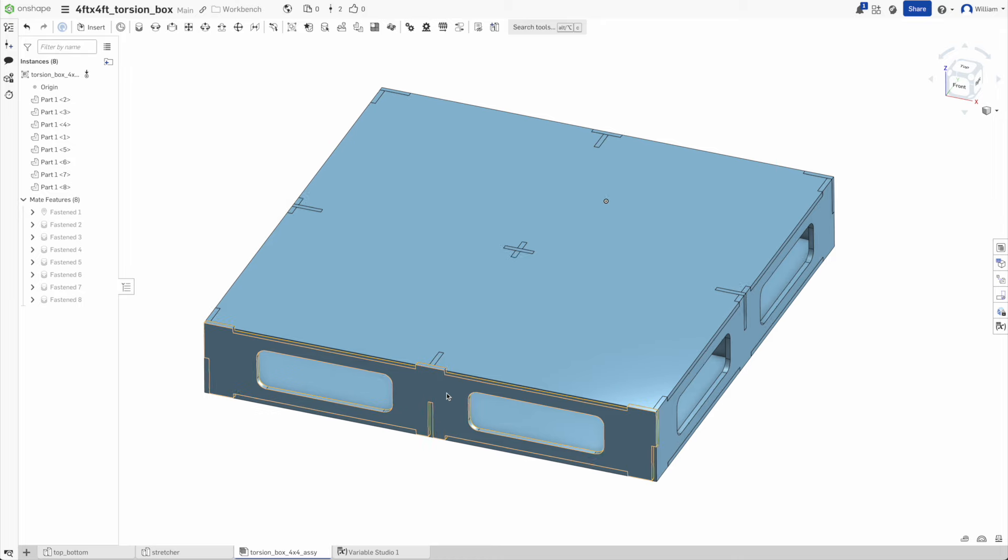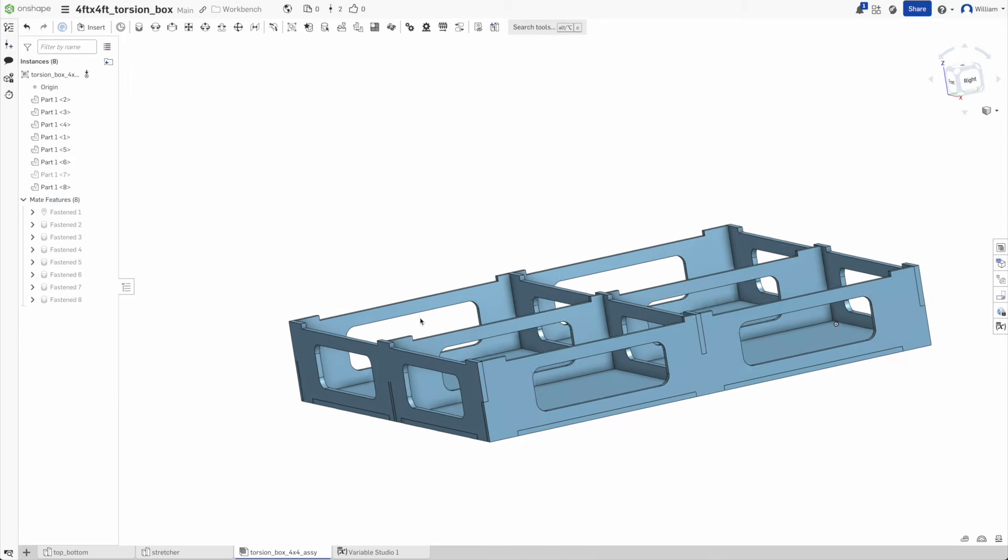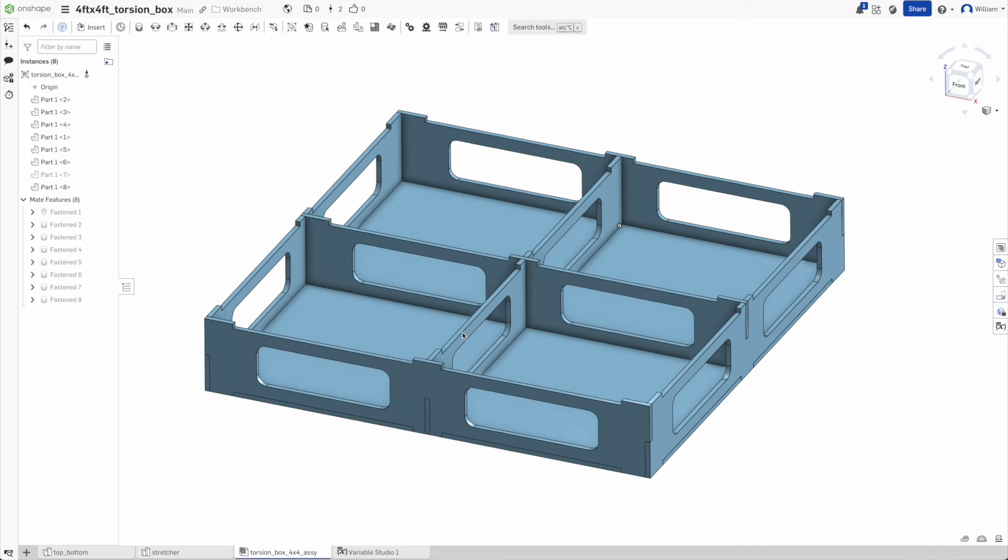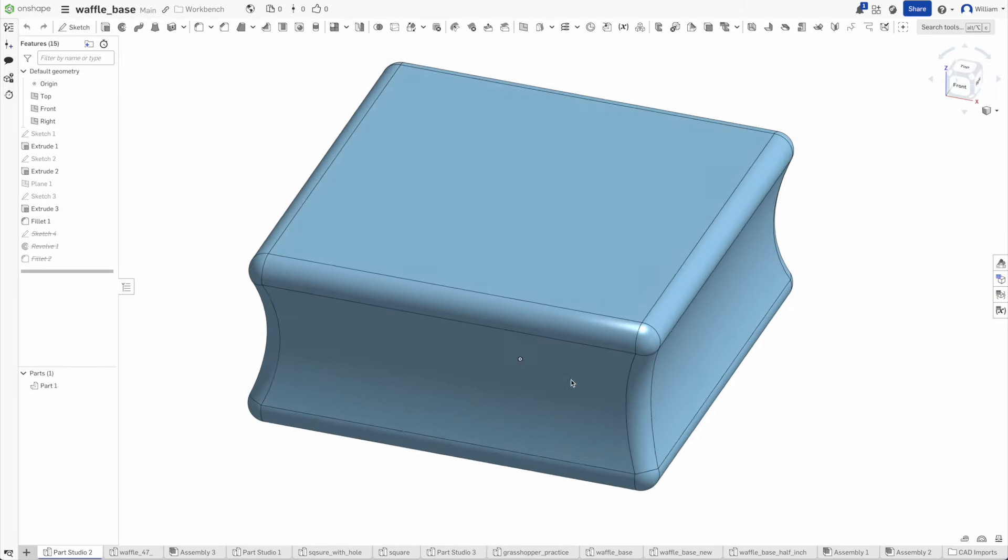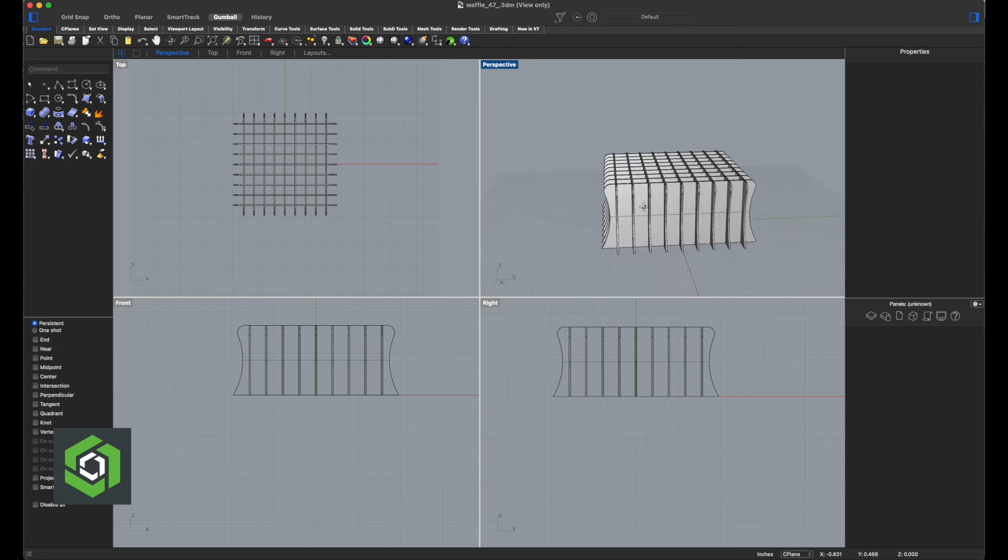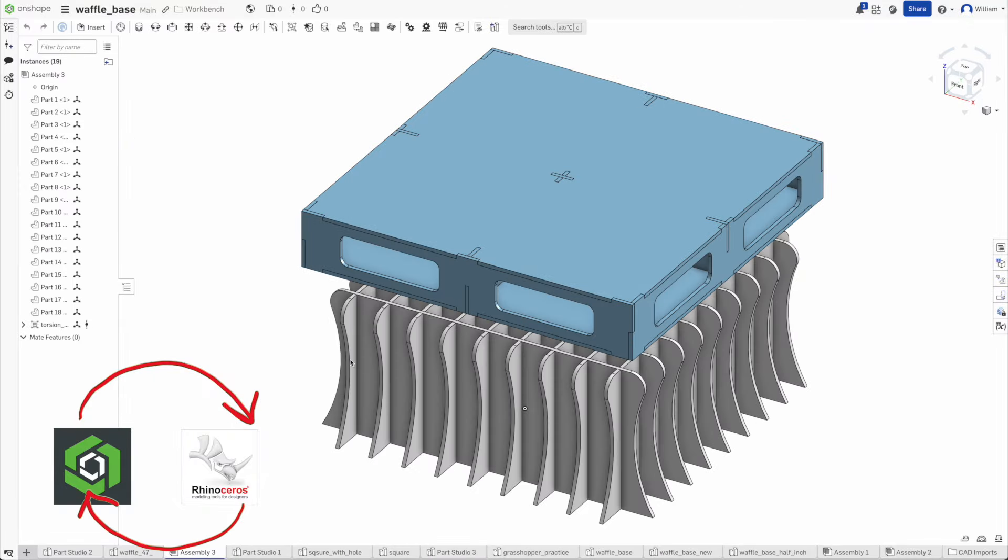The obvious choice for the top was to build a torsion box. This would keep the top extremely flat, but also allow for space inside to hold the electronics and route the cabling. The base was inspired by what's called a waffle structure, which I first designed in OnShape as a solid body, and then turned into a 3D lattice version using Rhino 7 with the grasshopper plug-in, and finally brought it back into OnShape.